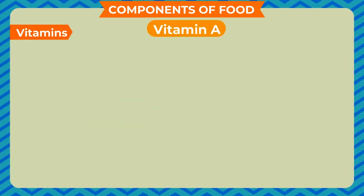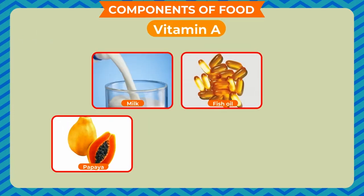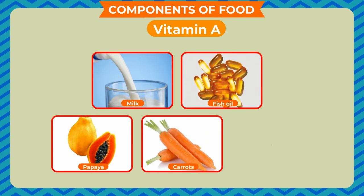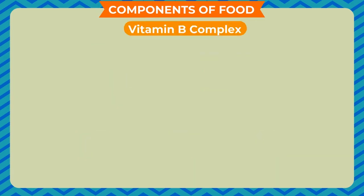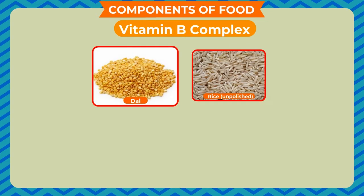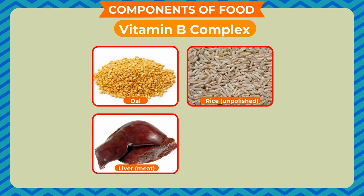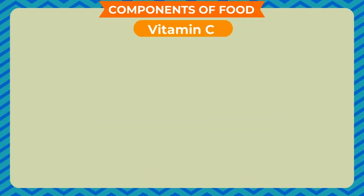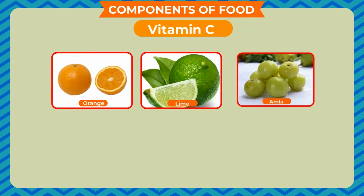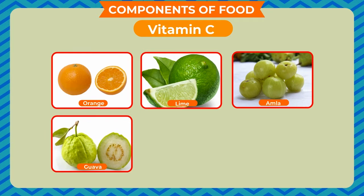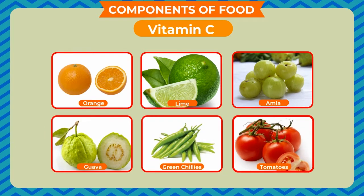Vitamin A is present in milk, fish oil, papaya, carrots, and mango. Vitamin B complex is present in dal, unpolished rice, liver, meat, and apple. Vitamin C is present in orange, lime, amla, guava, green chilies, and tomatoes. Vitamin D is present in milk, butter, eggs, liver, meat, and fish.